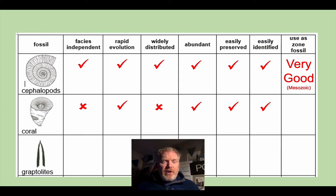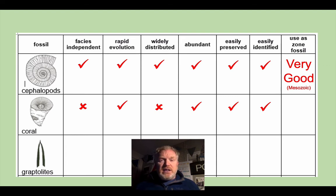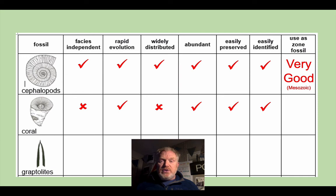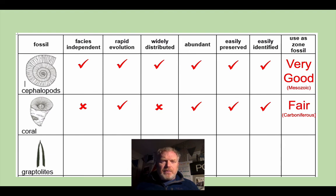Corals are very fussy about where they live — it's a very limited set of conditions in which they live. So they're not facies independent. They did evolve rapidly, but because of their fussiness about the environment, they weren't widely distributed around the world. They are very abundant, very easily preserved — they're very robust things — and very easily identified. As a result, their use as zone fossils is really only fair, and where they do come into their own is the Carboniferous period.